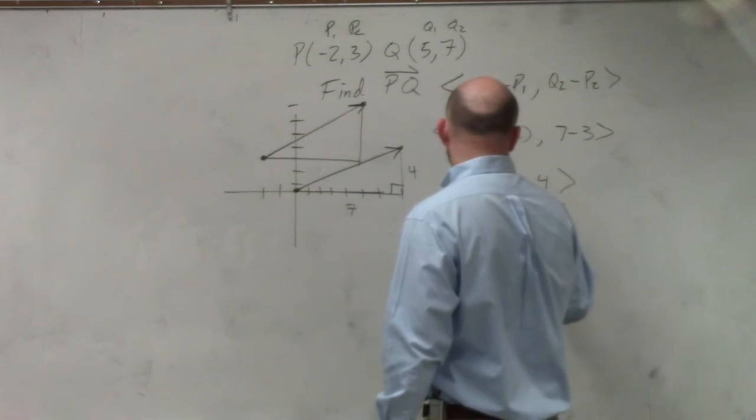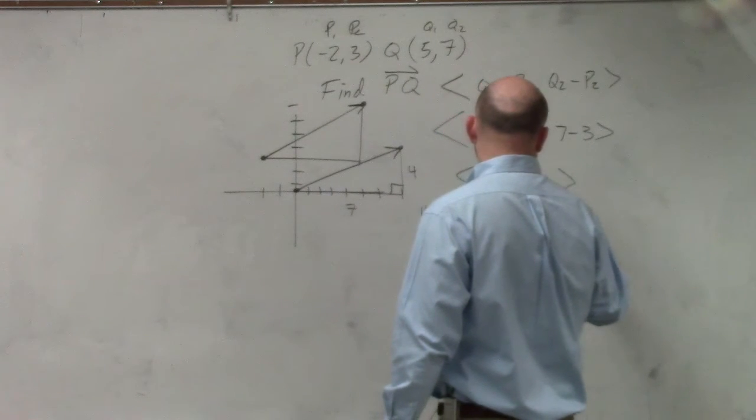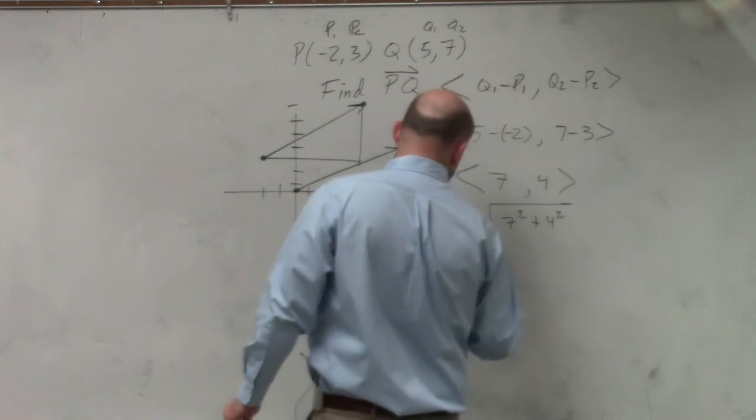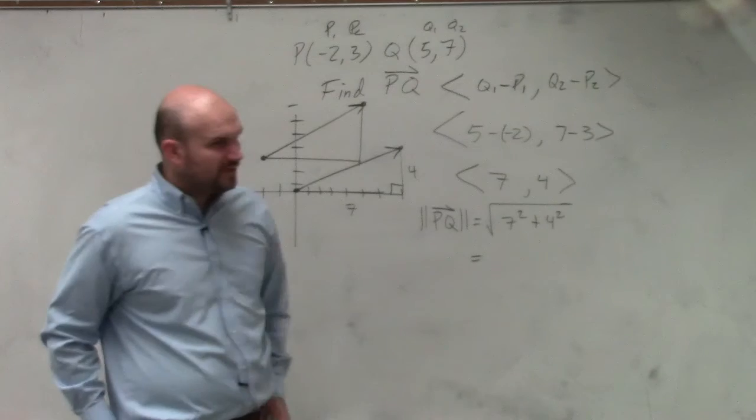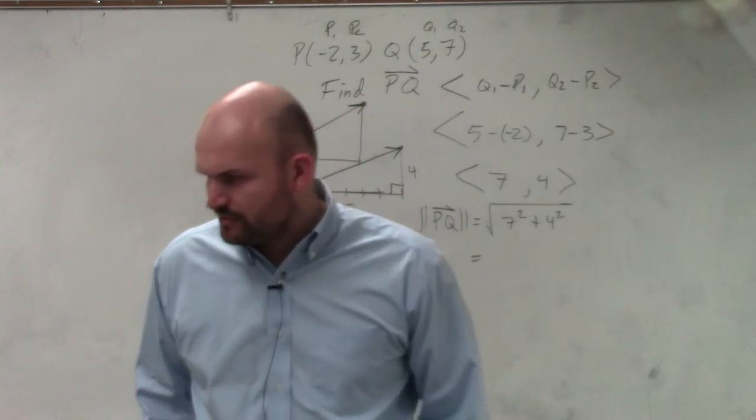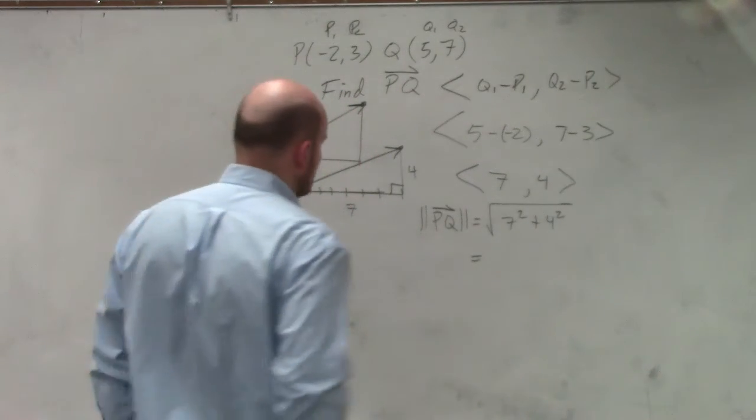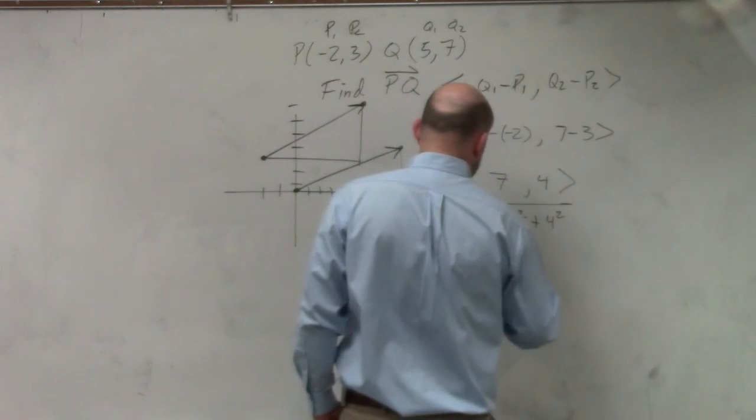And that's going to be the square root of 7 squared plus 4 squared. And that's going to be 49 plus 16. So that's going to be square root of 65.